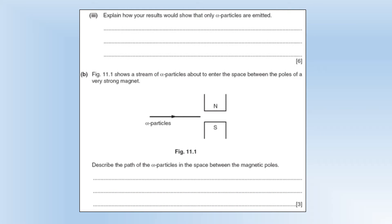So explain how your results would show that only alpha particles are emitted. Well, the count rate would drop to background when the paper barrier is inserted, because paper can absorb alpha radiation, and it won't pass through. So that is why it would happen.